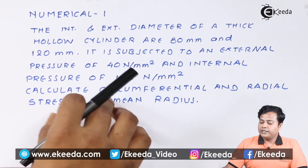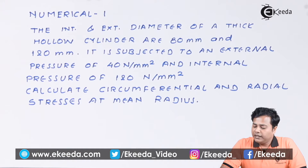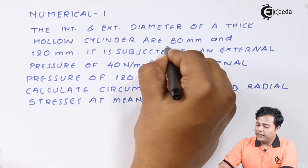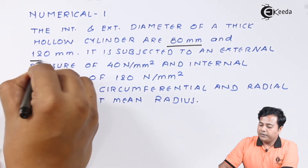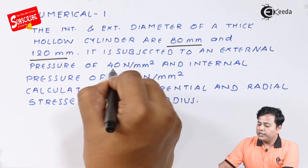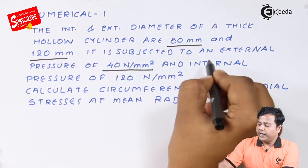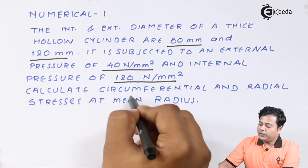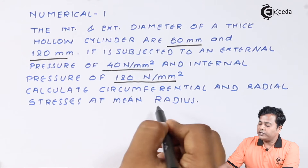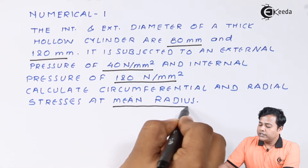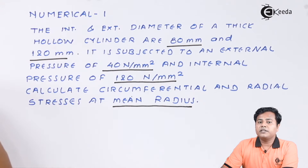Numerical one: the internal and external diameters of a thick cylinder are given as 80 mm and 120 mm. It is subjected to an external pressure of 40 Newton per mm square and an internal pressure of 120 Newton per mm square. Calculate the circumferential and radial stresses at mean radius — we need to find Sigma radial and Sigma circumferential at mean radius.